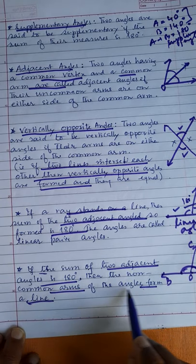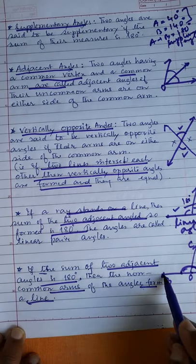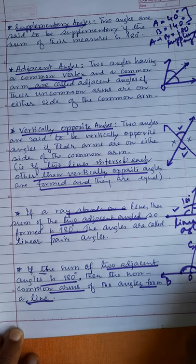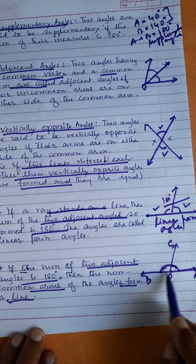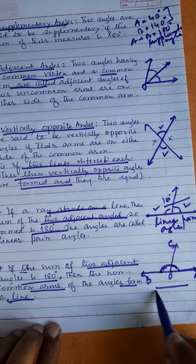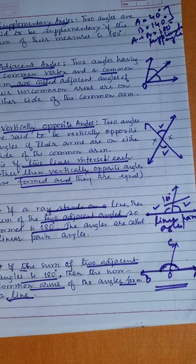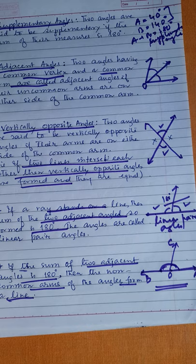The non-common arms of the angles form a line AB. These are the basic concepts you have to keep in mind regarding lines and angles — related to chapter 6.1. In the next class we will discuss the problems of exercise 6.1. Thank you, have a nice day.